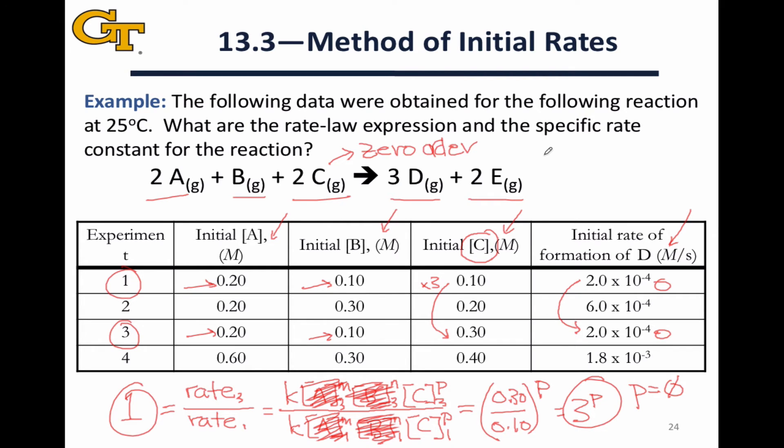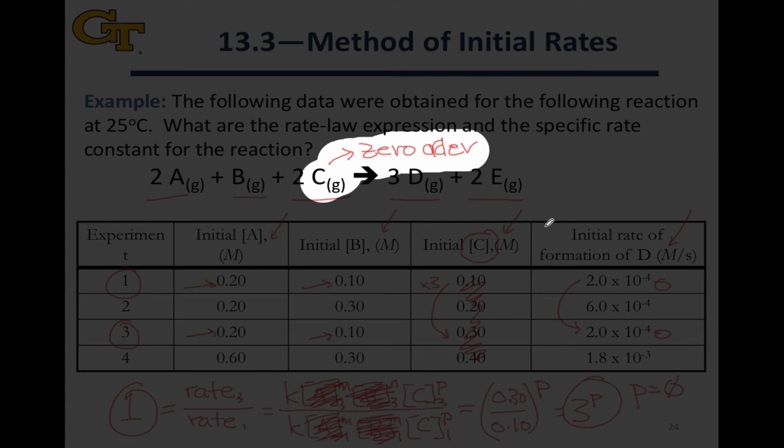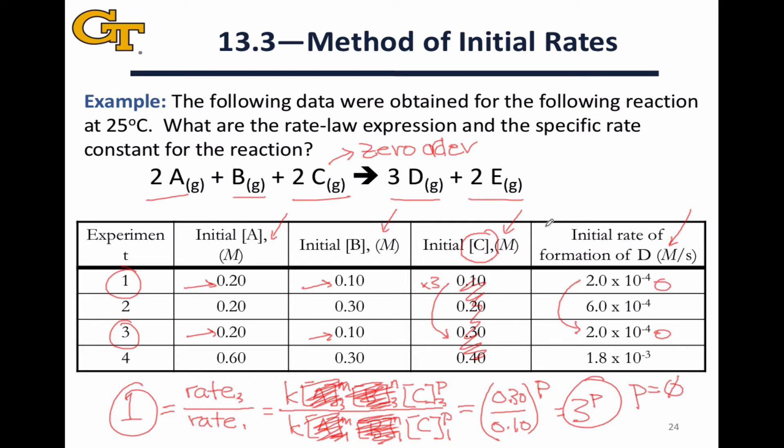The nice thing about this is it makes our lives a lot easier when we go to look at the additional reaction orders because we can now ignore the fact that the concentration of C is changing throughout all of these runs. The concentration of C does not impact the rate. That's what 0 order behavior means. So we can essentially ignore what's going on in C when we go to find the orders of reactants A and B.